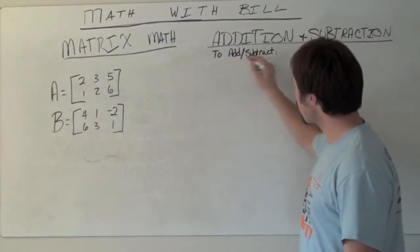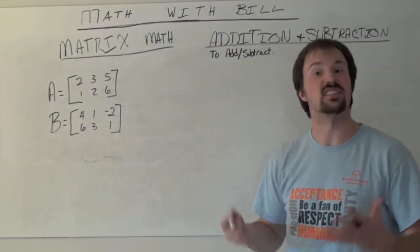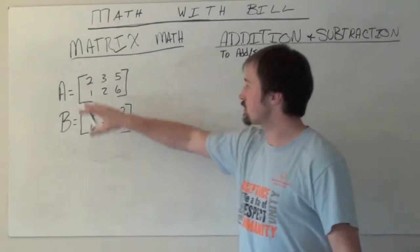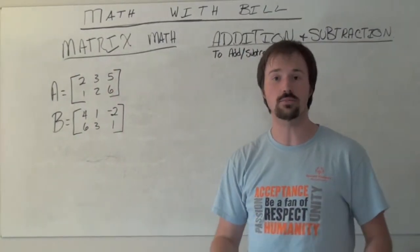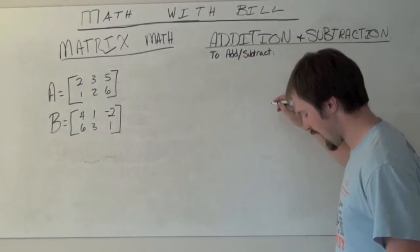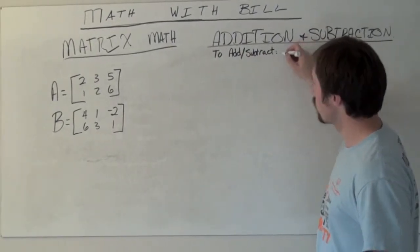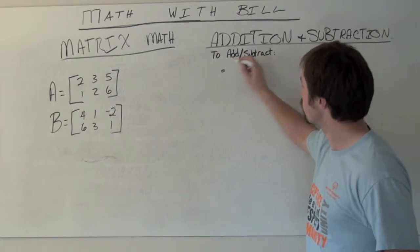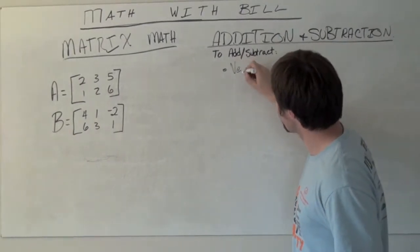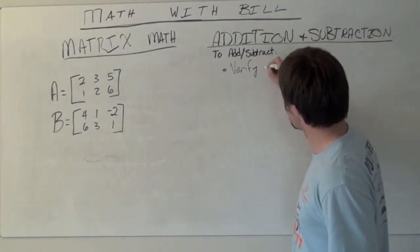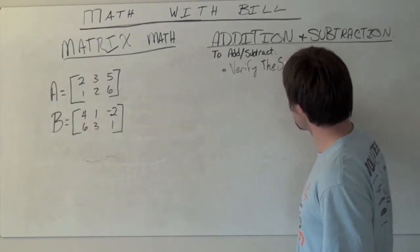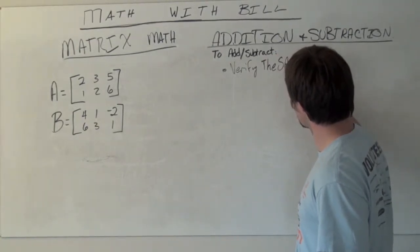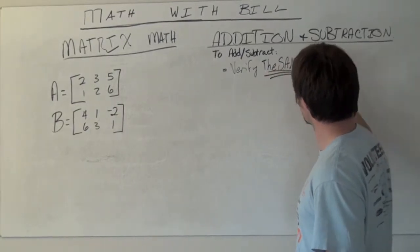To add or subtract two different matrices—a rectangular arrangement of numbers in rows and columns—we need to do two things. Number one, we need to verify that we have the same dimension.